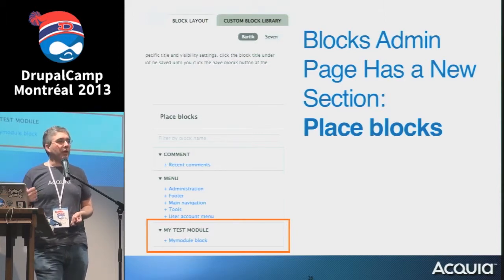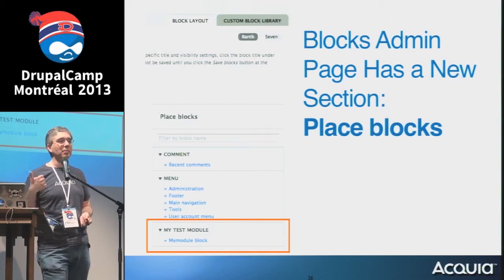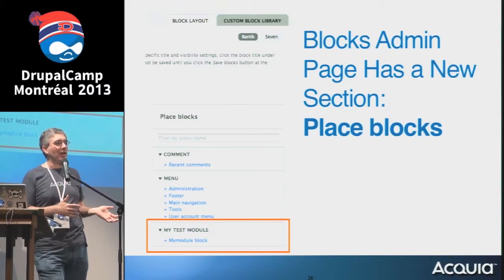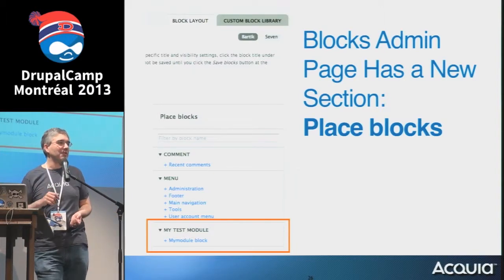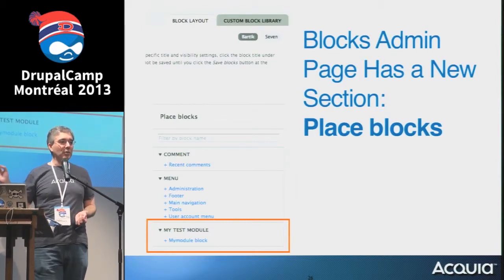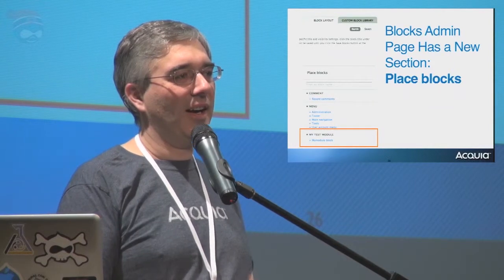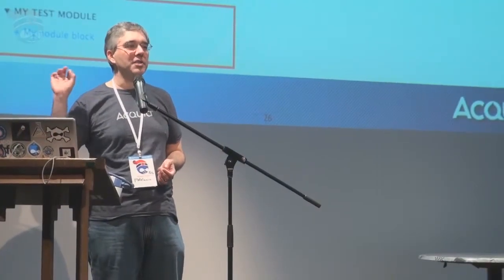One fantastic feature of Drupal 8 I haven't heard people talking about: you can place the same block as many times as you want. In Drupal 7, putting the same block in one region and another region was a pain — you probably had to write a custom module that redeclares the block. In Drupal 8, you can just give me an instance in this region and another instance in a different region. In fact, you can have two instances of the same block with different configuration — for example, your ad block in the right sidebar showing one set of ads and in the left sidebar configured to show a different set.